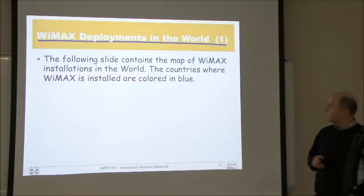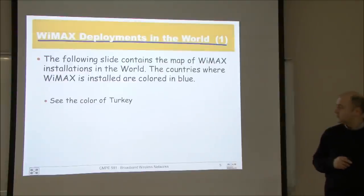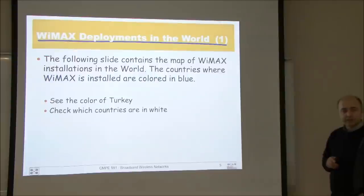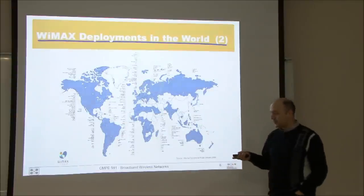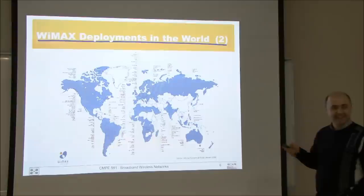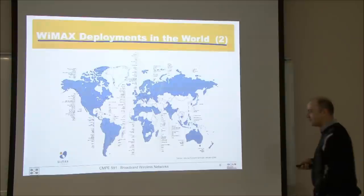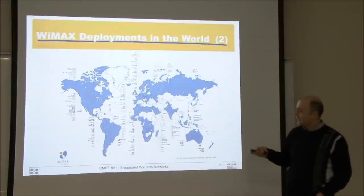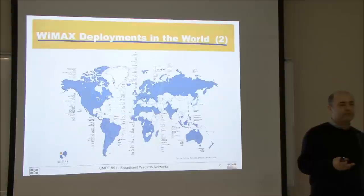If you look at WiMAX deployments in the world — this is a little bit old — in the following slide you will see a map where countries with WiMAX installed are colored in blue. Look at the color of Turkey and check which countries are in white. The blue ones are where you have deployments. This is from the WiMAX forum and is a little bit misleading — like Russia is fully colored blue, but you don't have WiMAX all over the country. But in many, many countries you have WiMAX deployments.